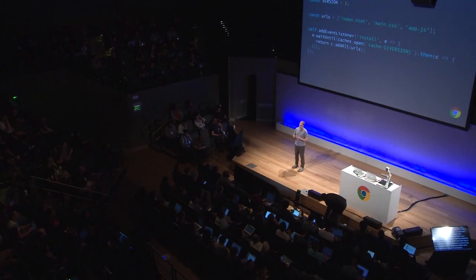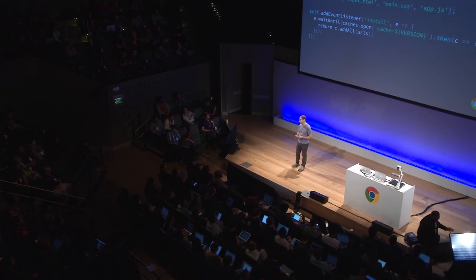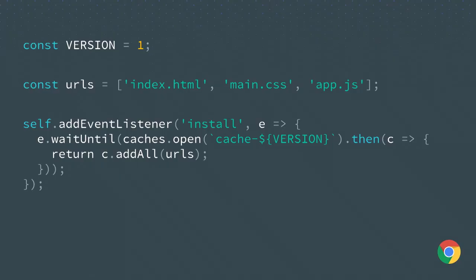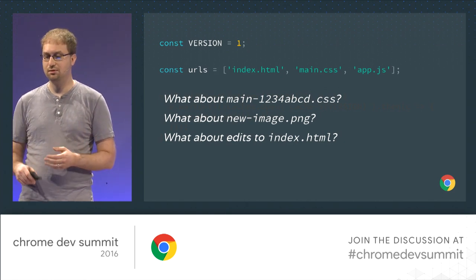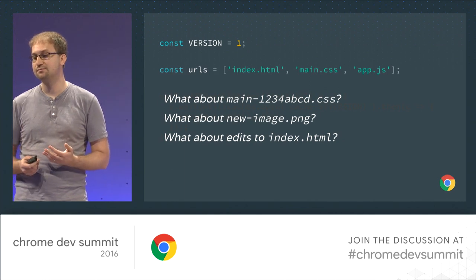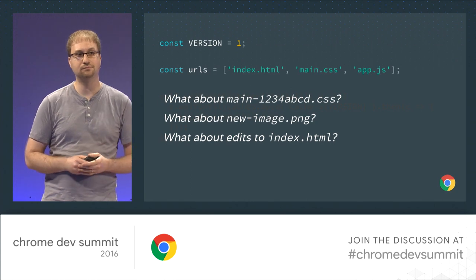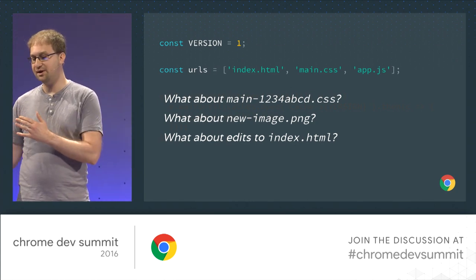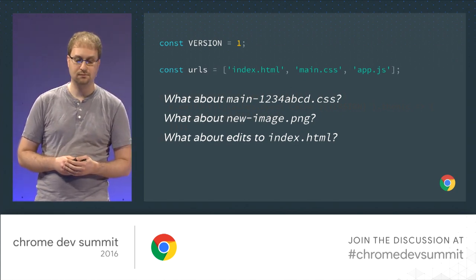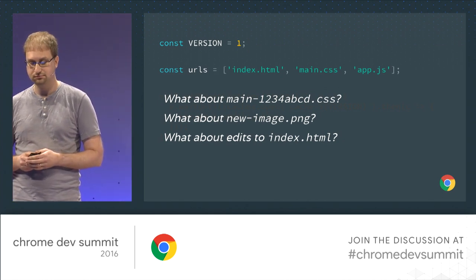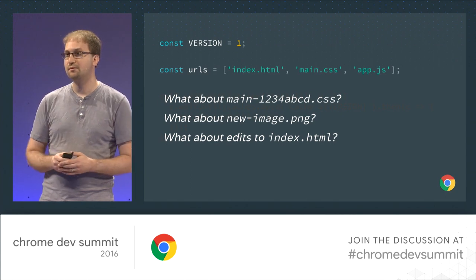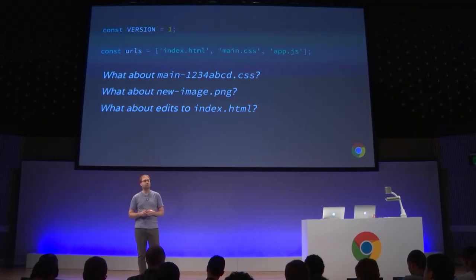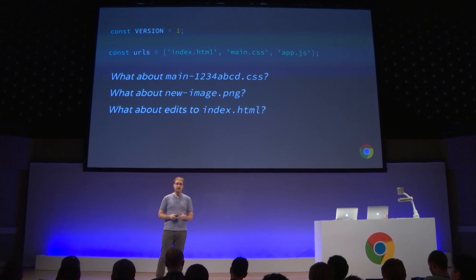For instance, here's a common code pattern for pre-caching a set of resources during your service worker's installation. URLs to be pre-cached are stored in an array, and you need to increment your version variable whenever you decide to change one of those resources to trigger a service worker update. But in a production web app following modern best practices, you won't have friendly file names in your URLs array — you're much more likely to have file names with a unique hash based on the file's contents. And what about a brand new image you added to your page but forgot to include in your URLs array, or an existing file like index.html where you made a change and forgot to update the version? These are common pitfalls.